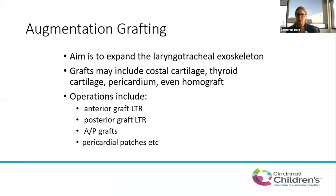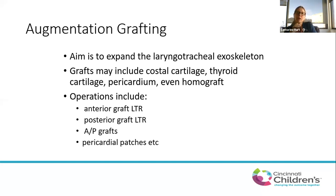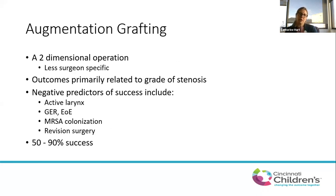The aim of augmentation grafting is to expand the laryngotracheal exoskeleton — you're not just addressing the intraluminal scar as with endoscopic procedures, you're actually making the external part of the trachea or subglottis bigger. You can use pretty much any sort of cartilage, or in some instances pericardium or homograft, although those are very uncommonly used. The graft can be placed in the anterior cricoid, posterior cricoid, or both.